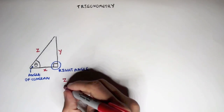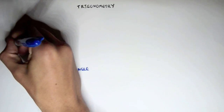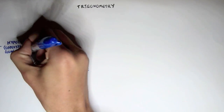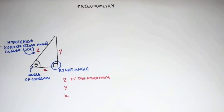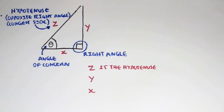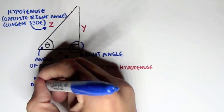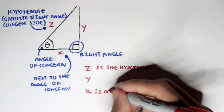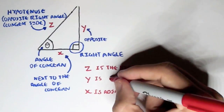So for example, Z is the hypotenuse. The hypotenuse is always opposite the right angle and is usually the longer side. The remaining sides, X and Y, we can also designate names depending on their location with respect to the angle of concern. Because X is closer to the angle of concern, we call X the adjacent side. And Y is opposite the angle of concern, so we call Y the opposite side.